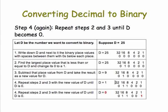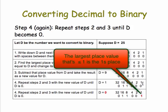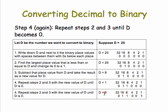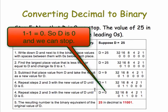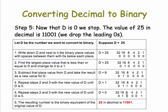Step four again: I repeat that. In this case, the largest place value that's less than or equal to D is one, so I put a one under it and subtract one from D. Now D is zero, therefore we can stop. And the resulting number we get — 0, 1, 1, 0, 0, 1 — gives us the value of 25 in binary.